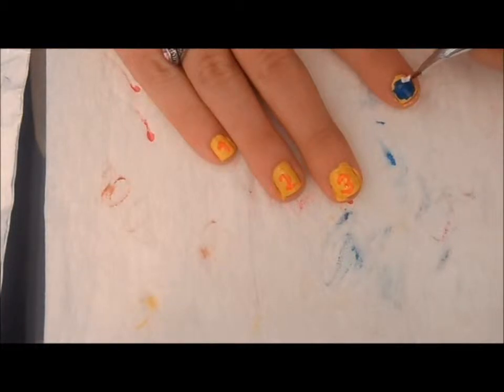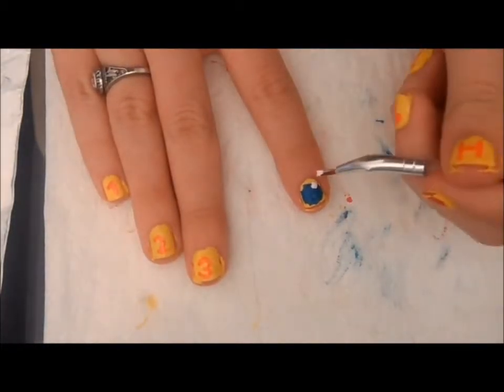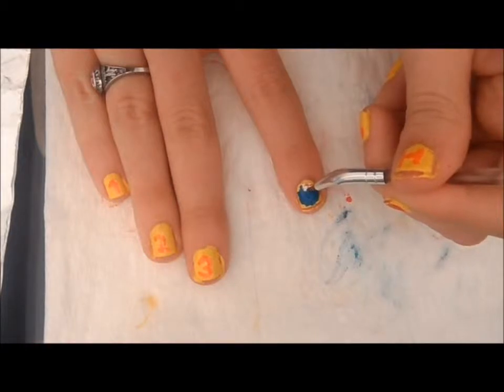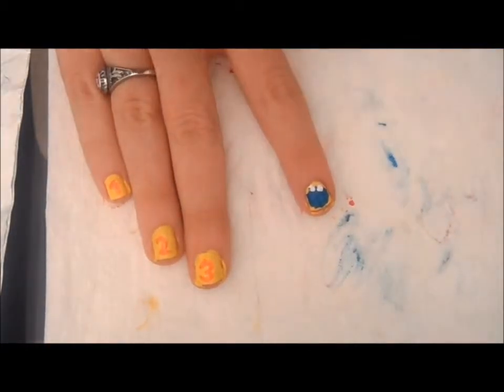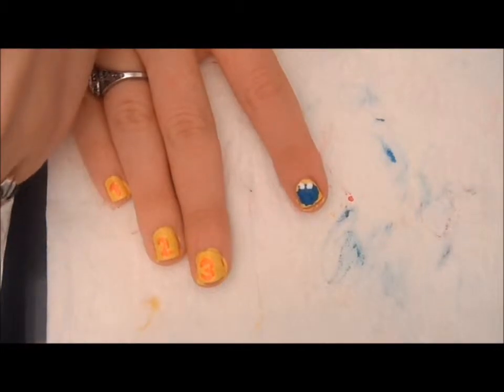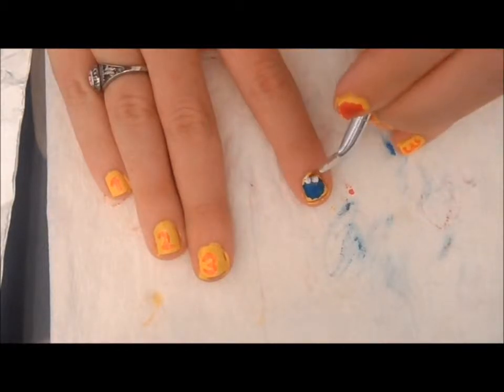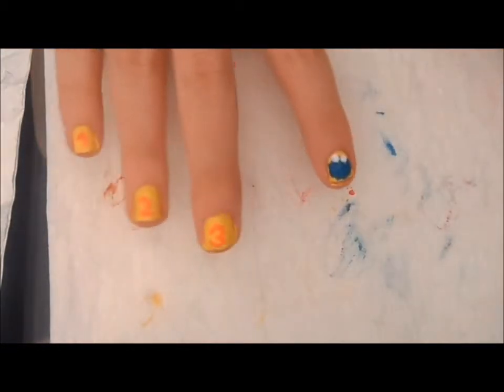When you're making your little blue blobby thing, make sure to keep that in mind. I kind of didn't keep that in mind, so I'm having to work very hard to not go onto my cuticle. Get them as round as possible because Cookie Monster's eyes are round. They're not oval or anything like that, they're nice and round.